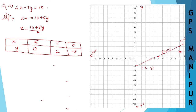Joining all the points gives the graph for 2x minus 5y equals 10. This is how the graph will look. You can try it yourself as well. Thank you so much — we will meet in the next video.